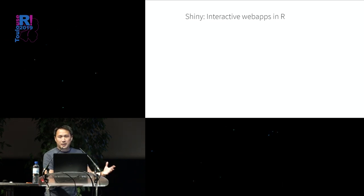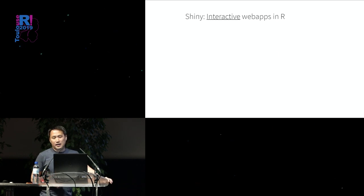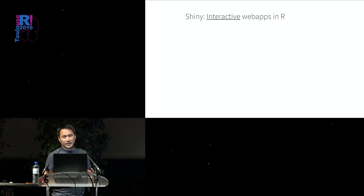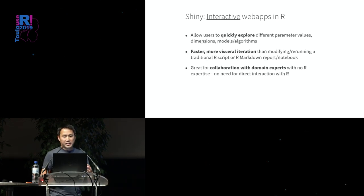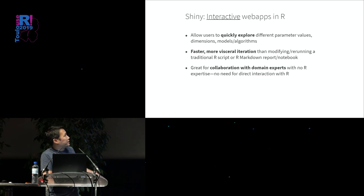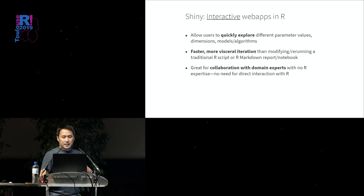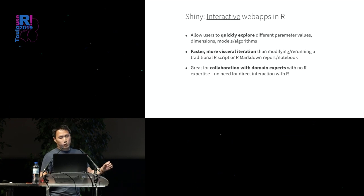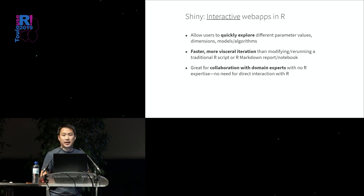Hopefully by this point most of you know that Shiny is a way to build interactive web apps in R, and I want to focus on the interactive part. Interactivity allows users to quickly explore different parameter values and aspects of analyses. When you can explore through an interactive UI, the speed of iteration gives you much faster and more visceral feedback. This is especially important when collaborating with people who don't have R experience — giving them an interactive UI is extremely powerful.